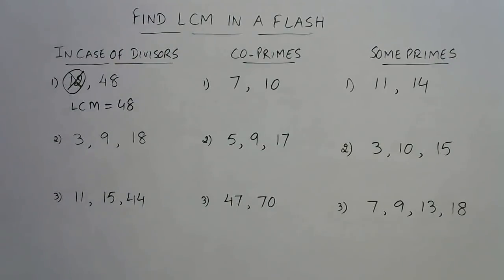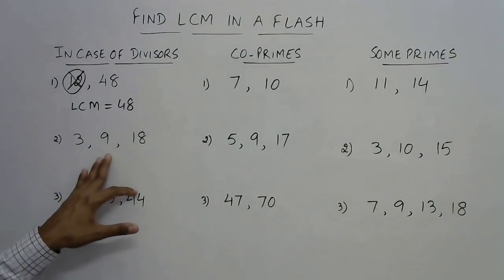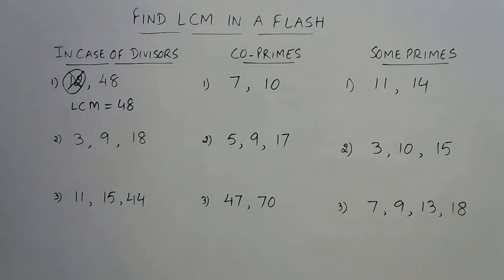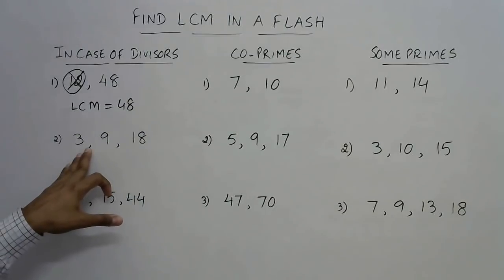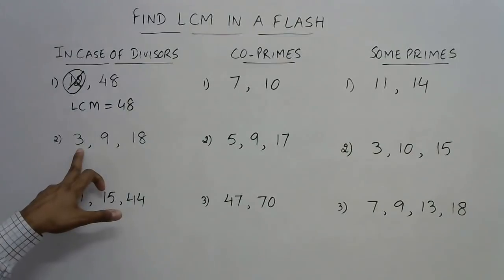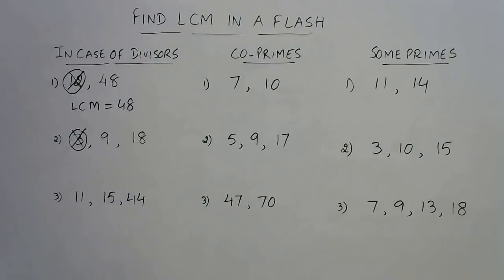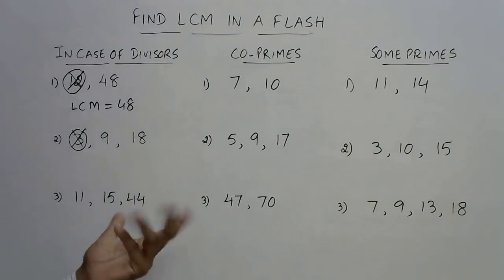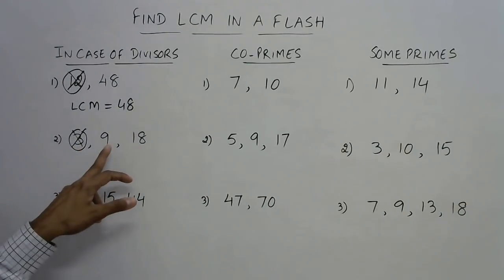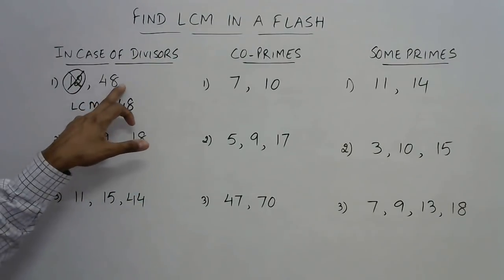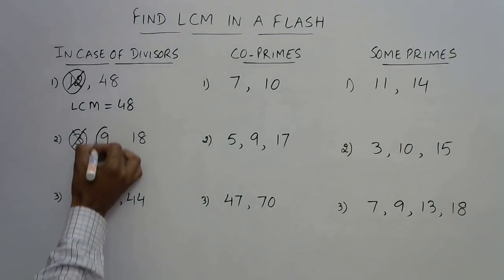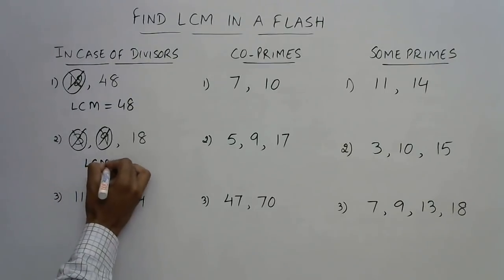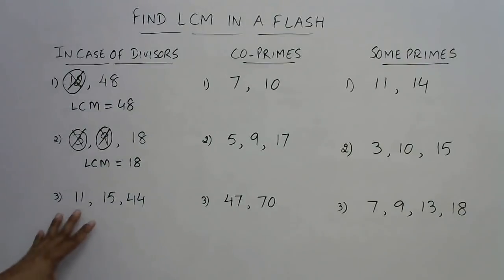Now see 3, 9, and 18. When you have three numbers, just see whether any number is dividing some other number. 3 exactly divides 18, and 3 exactly divides 9 also. So even if 3 divides one of these two numbers, we eliminate 3 — just forget it, because it is a factor of both 18 and 9. Now looking at 9 and 18: 9 divides 18, so just like we crossed out 12 and got the answer 48, here we eliminate 9 and the final answer is 18.